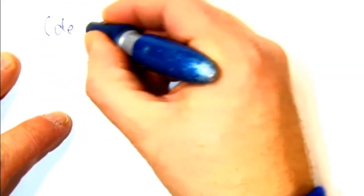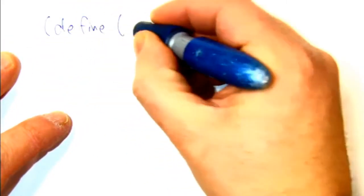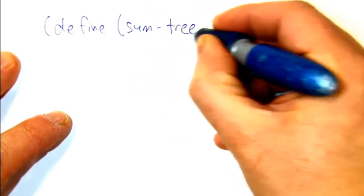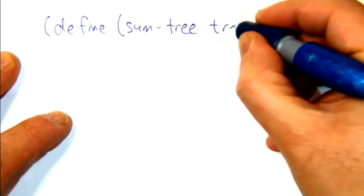First, write the code to sum up all the leaves in a tree. So we're going to write a function called sumTree. We'll take a tree as its parameter.